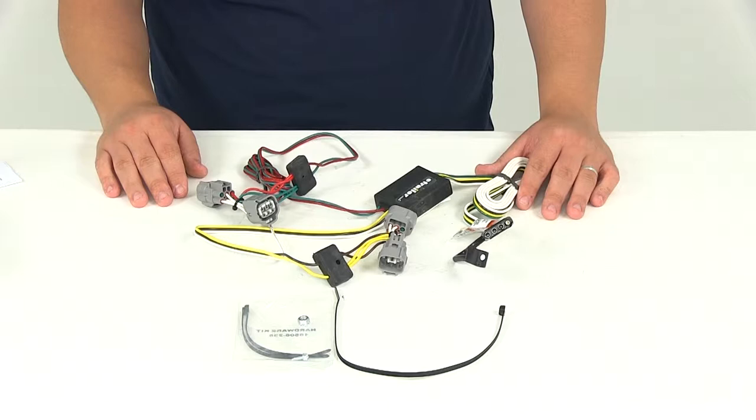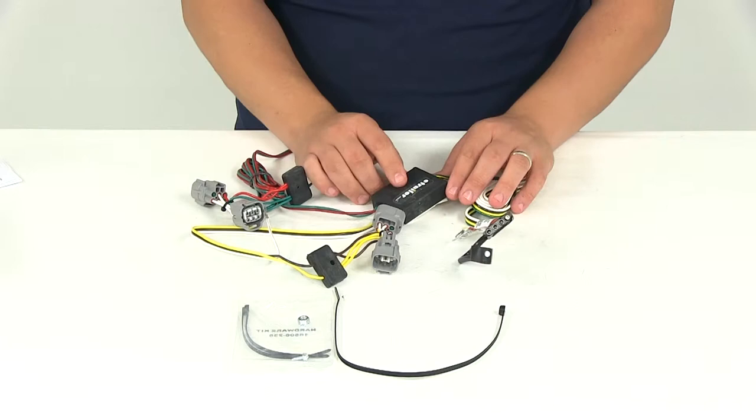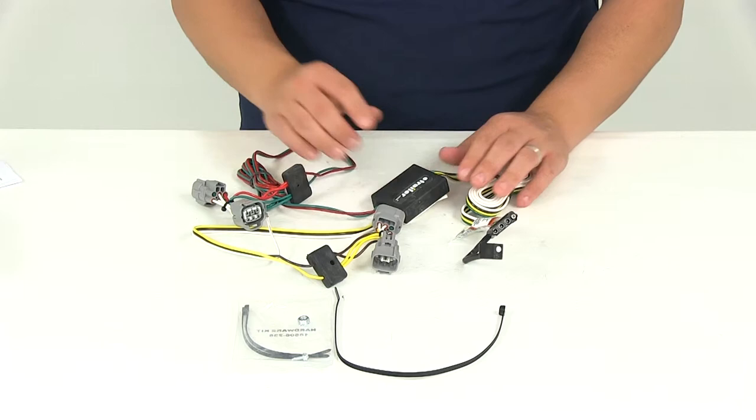All you have to do is locate the connection point either behind the tail lights or along the frame rail and plug in your T connectors. It's going to include the tail light converter that's going to ensure that your vehicle's wiring matches that of your trailer's.